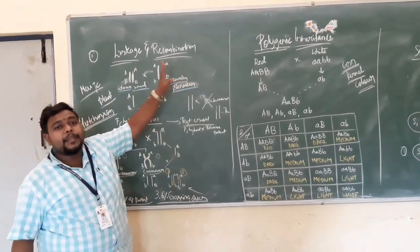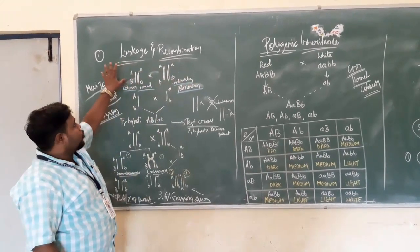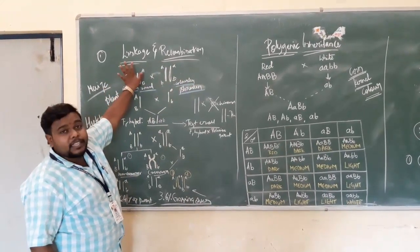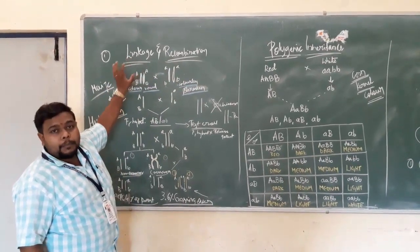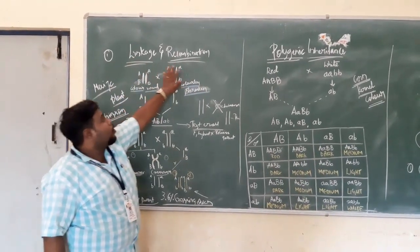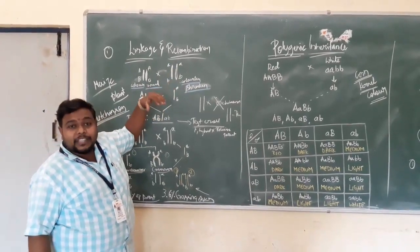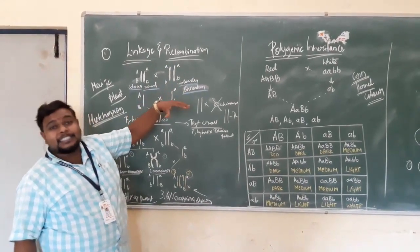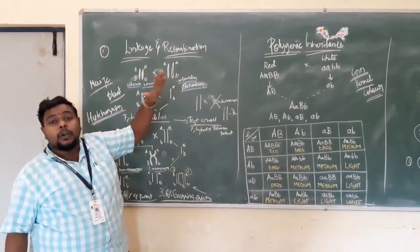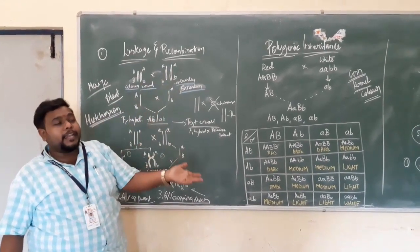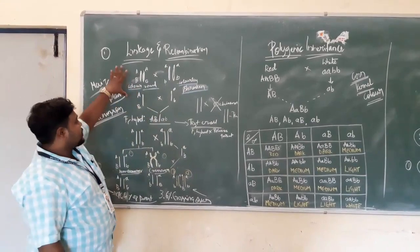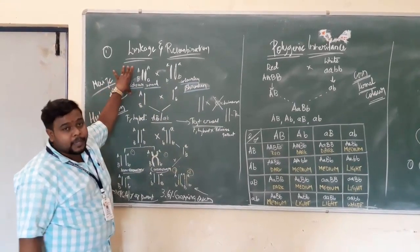So when asked in examinations, we have to define what we mean by linkage and what we mean by recombination, and with the help of an example we have to explain it — and the maize plant is that example.